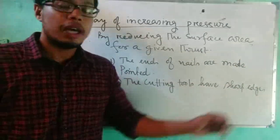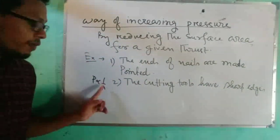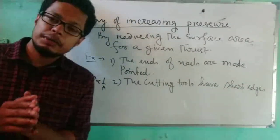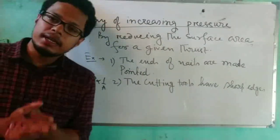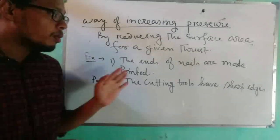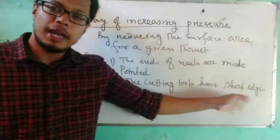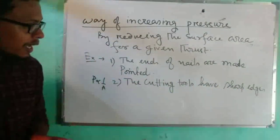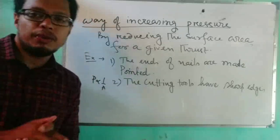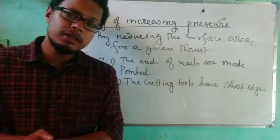The second example: cutting tools have sharp edges for the same reason — P is inversely proportional to A. For the sharp edges of a knife, we can get large pressure by applying a small effort, so cutting can be done with less effort.